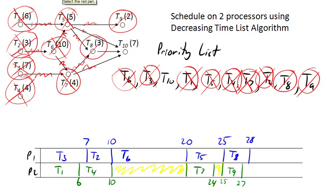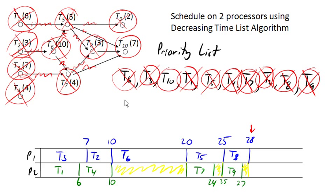At time 27, task nine gets completed, but nothing new becomes ready. So processor two is again going to idle. At time 28, task eight gets completed — task nine was already completed — which makes task ten ready. We can go ahead and assign task ten to processor one, bringing us out to a time of 35 units. And 35 units is our finishing time for this schedule.